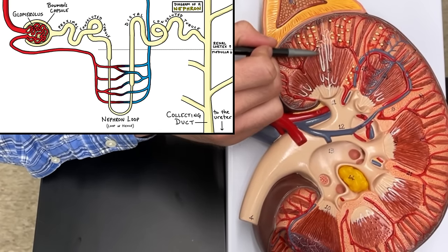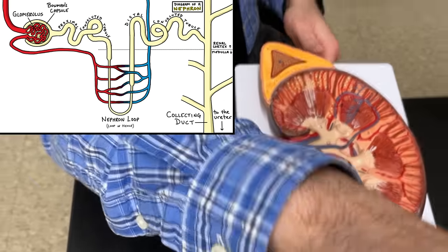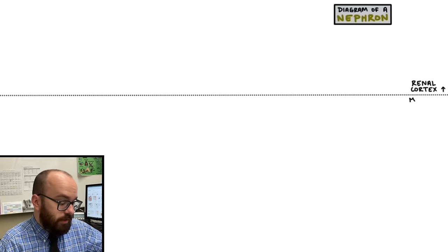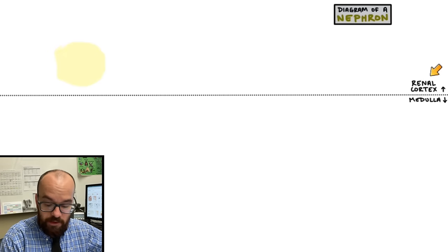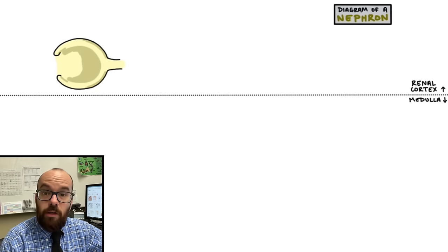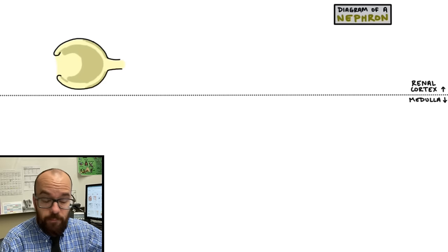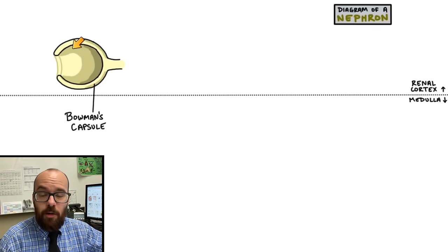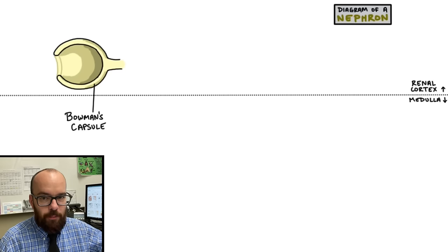Now that we know where those nephrons are located within the kidney, let's jump to the whiteboard and get started. There are two main regions in our diagram here. Above the dotted line is the renal cortex, and everything below the dotted line is the renal medulla. We've also got something called the Bowman's capsule, which is going to be the beginning of the nephron where filtration first happens.